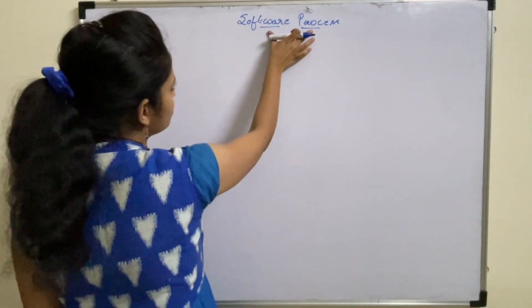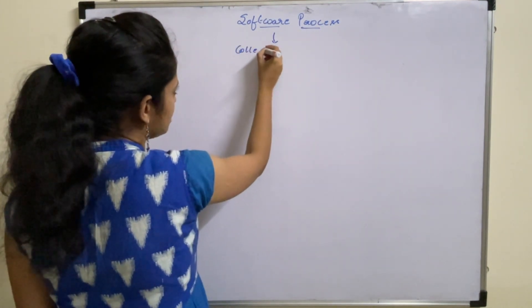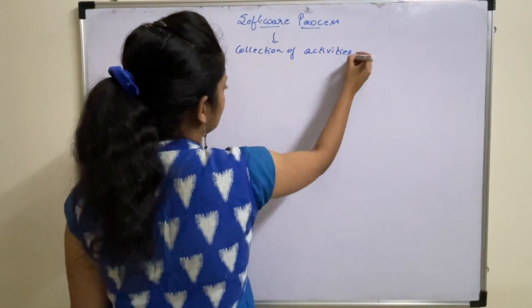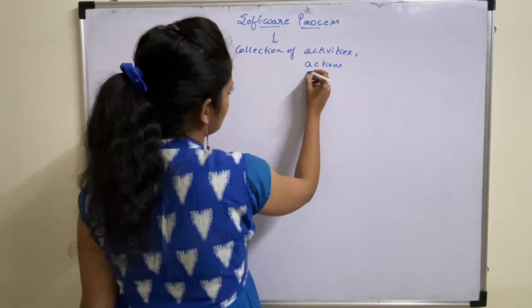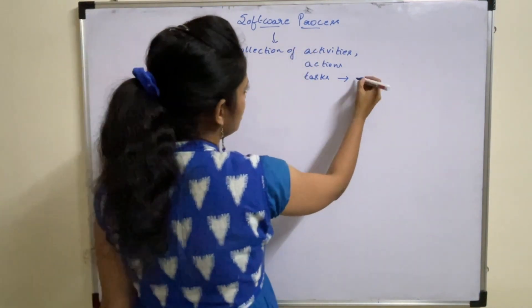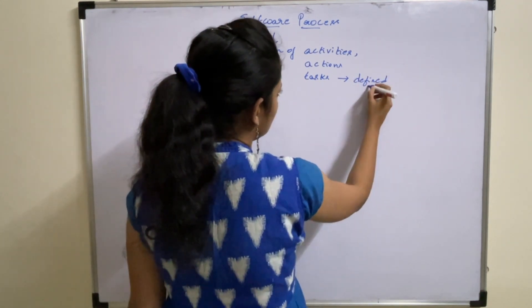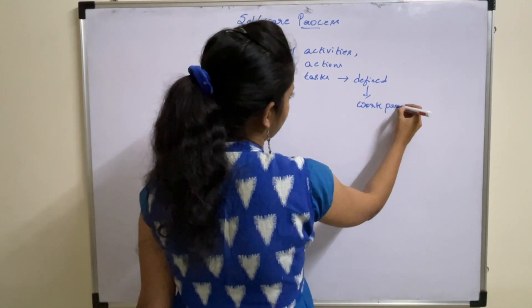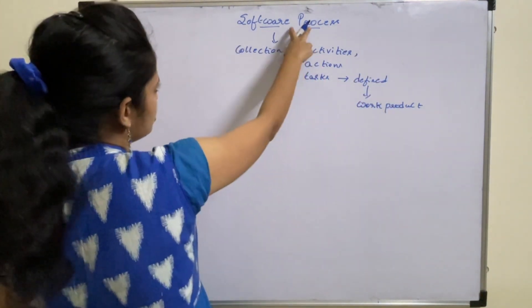Here we will discuss what is meant by software process. Software process is nothing but a collection of activities, actions, or tasks that are to be defined before creating the work product. First we need to define all these things, then only we need to create the work product. That is what is meant by software process.